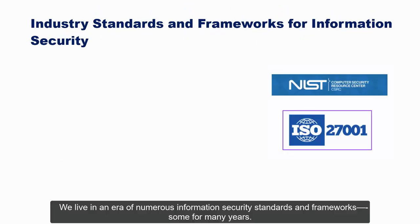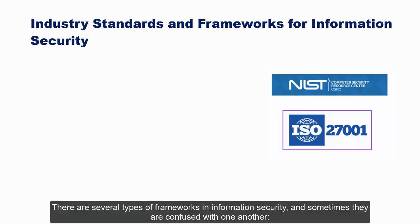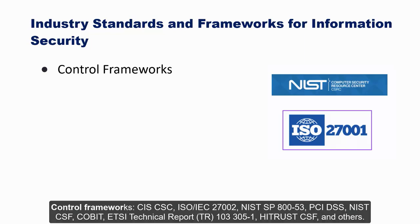We live in an era of numerous information security standards and frameworks, some in place for many years. This enables information security managers to get a head start on developing controls, policies, and standards instead of starting with a clean slate. There are several types of frameworks in information security. Control Frameworks include CIS CSC, ISO/IEC 27002, NIST SP 800-53, PCI DSS, NIST CSF, COBIT, ETSI Technical Report TR 103-305-1, and others.